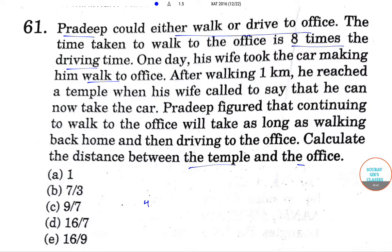So let this be his home and this be his office and the temple T somewhere over here. Now distance between home and temple is 1 km and distance between temple and office be y km.